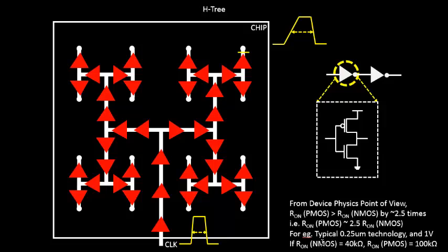...is 40 kilo ohms, the PMOS on resistance is roughly 2.5 times that, which is like 100 kilo ohms. So also, it's a function of supply voltage. We have to look into all these concepts as we move on, so we'll look into a separate section...